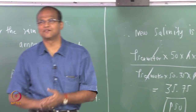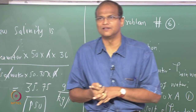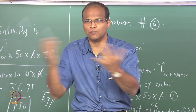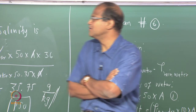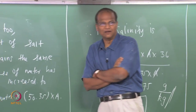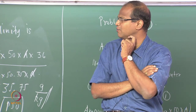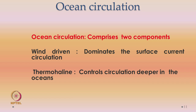Next, we discuss ocean circulation, which is very important. You may have heard about the Gulf Stream. Ocean circulation comprises two components: wind-driven circulation and thermohaline circulation. Wind-driven circulation dominates only the top layers, because wind cannot penetrate the deeper ocean. For deeper circulation, thermohaline convection is responsible — driven by temperature and salinity differences within the water.